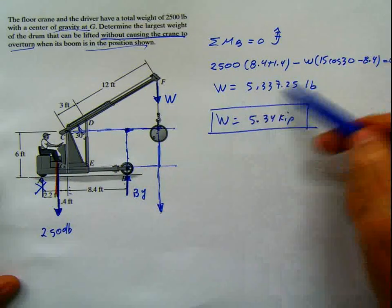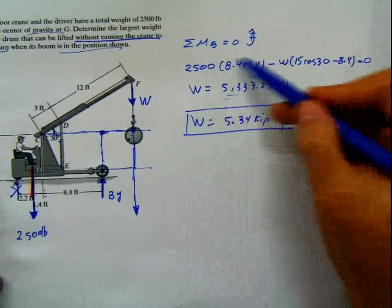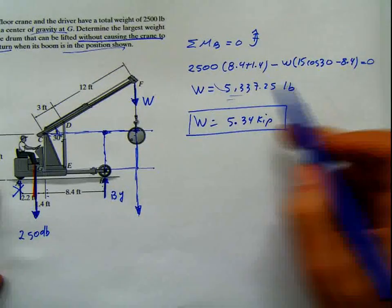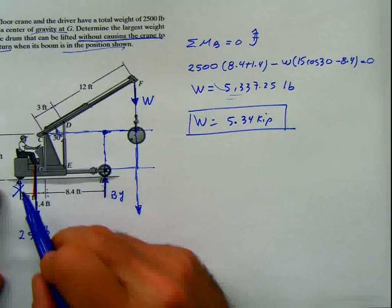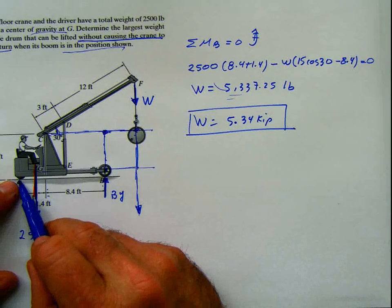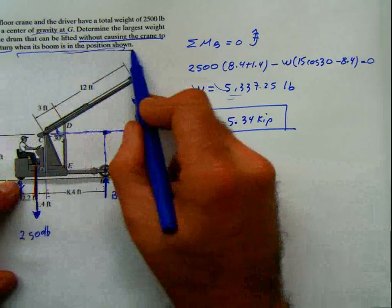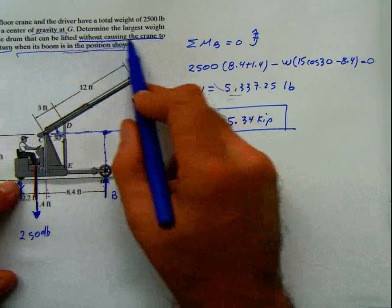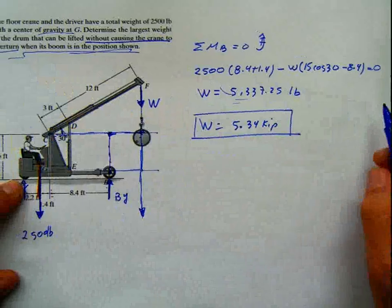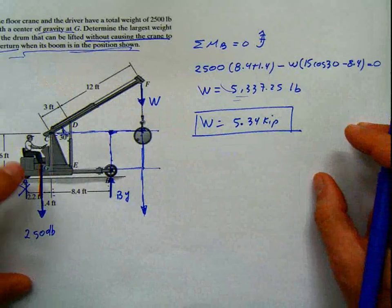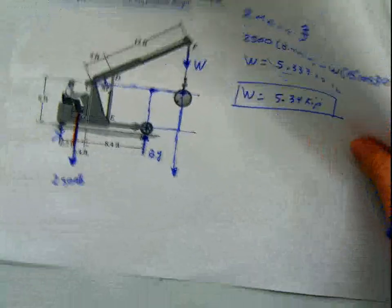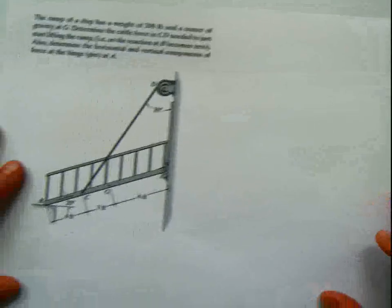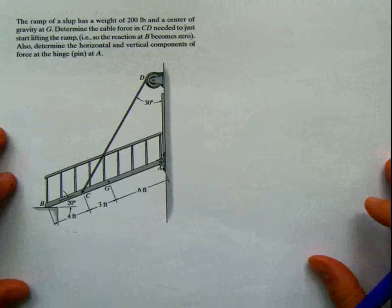You see how long this problem is? It's just one step — but of course it's one step only if you know what the problem means with this sentence: 'without causing the crane to overturn when the boom is in the shown position.' That's the key for this problem. Let's see another problem similar to this one, which is also looking for those type of clues.